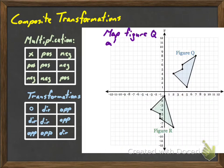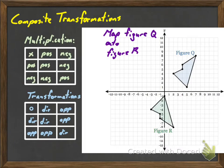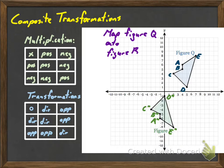Let's look at an example. Here we're going to map figure Q onto figure R. The first thing I'm going to do is label these points because it will make it a lot easier. So I'll label A, B, C, D, E, and then I'm going to label the other figure A double prime, B double prime, C double prime, E double prime.